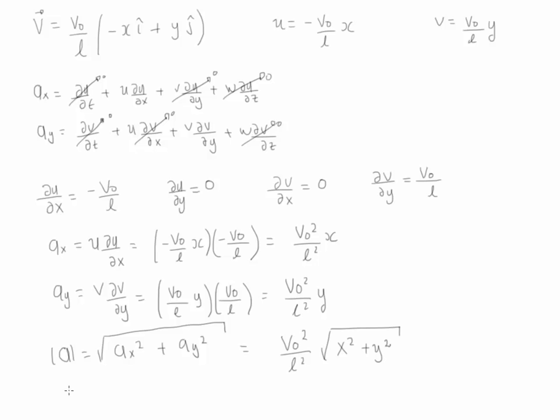So at the end, the acceleration vector is written as the component in the x-axis, so we write v0²/L² x times the i component plus v0²/L² y times the j component.